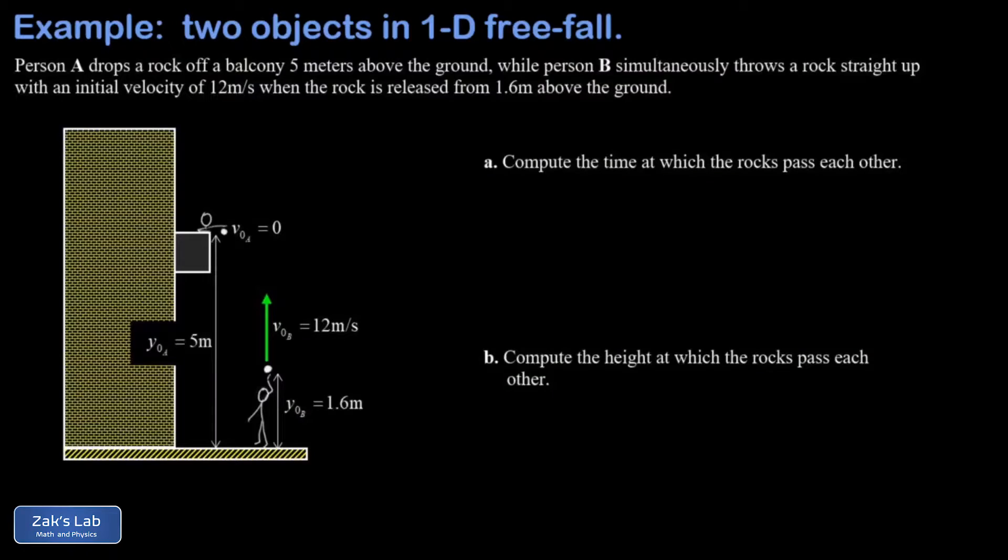In this problem, we have one person dropping a rock off a balcony and another person simultaneously throwing a rock upward toward the balcony. We're interested in finding out when the rocks pass each other and at what height.